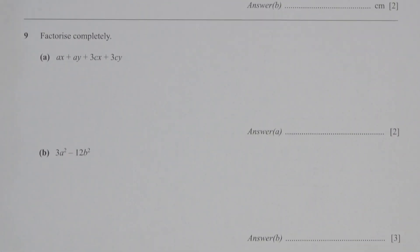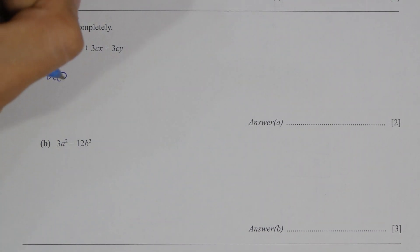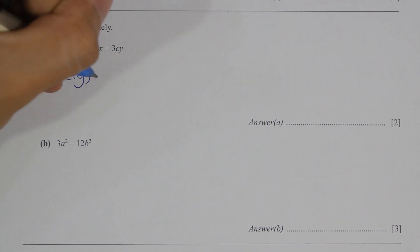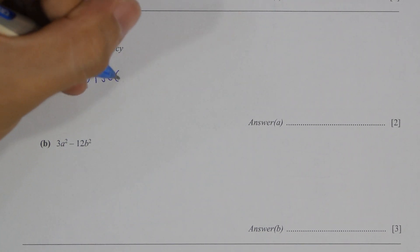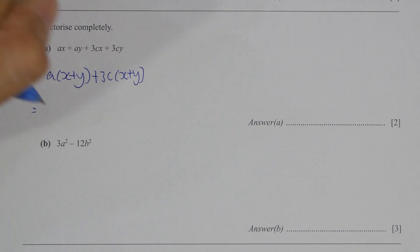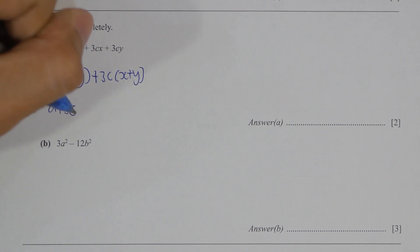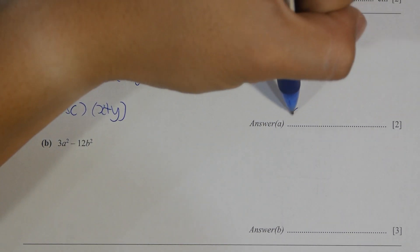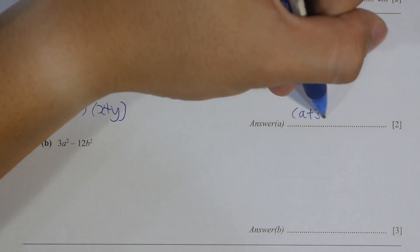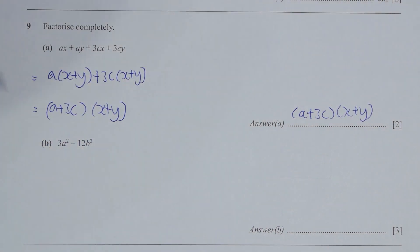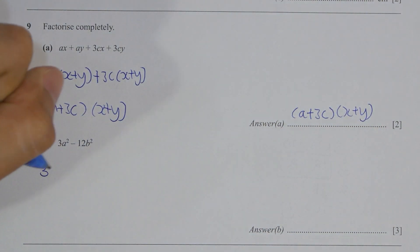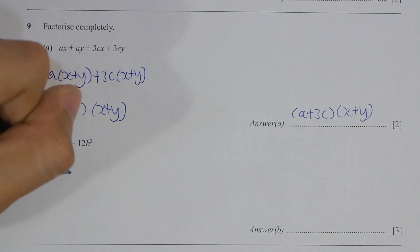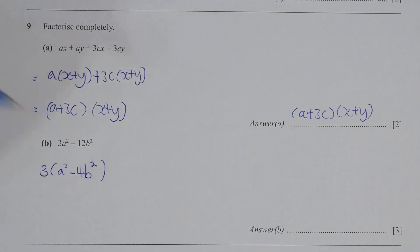For question 9 part A, I first extracted A from the first two variables and 3C from the remaining two variables. After the rearrangement, you get the final result as (A + 3C)(X + Y).